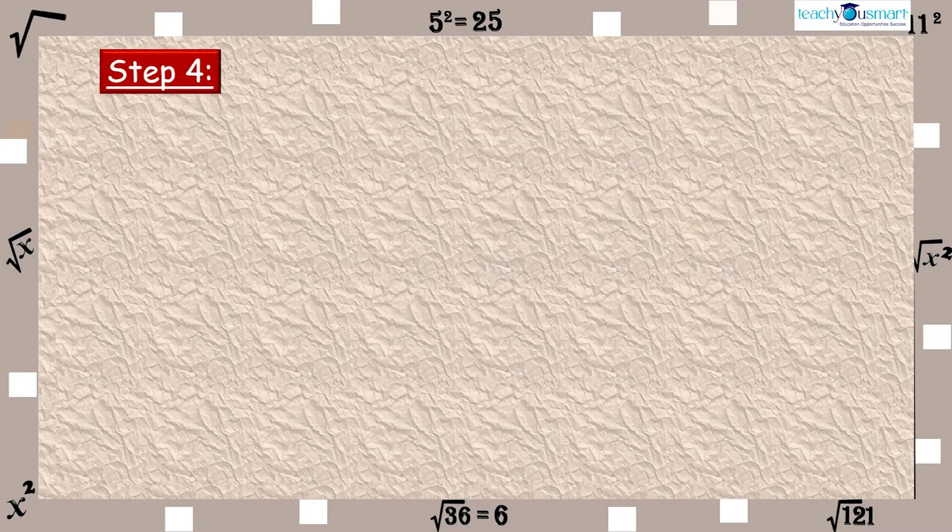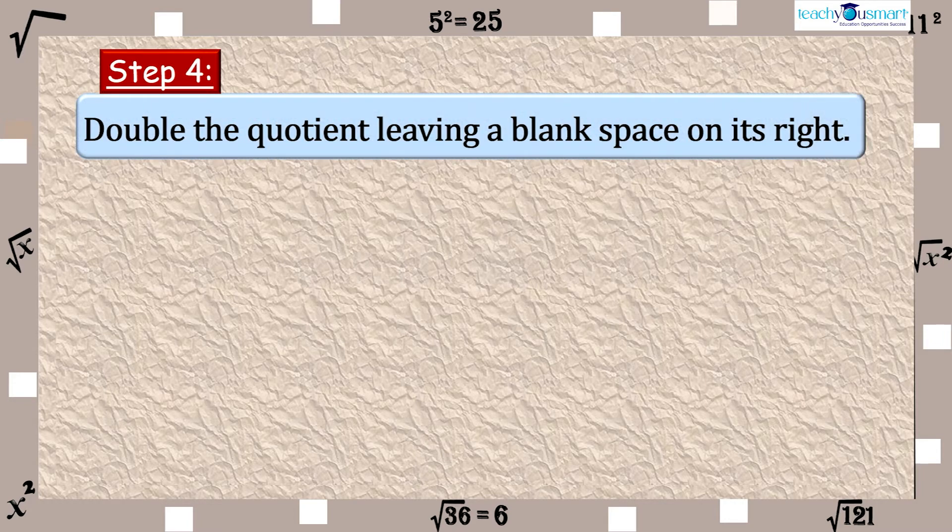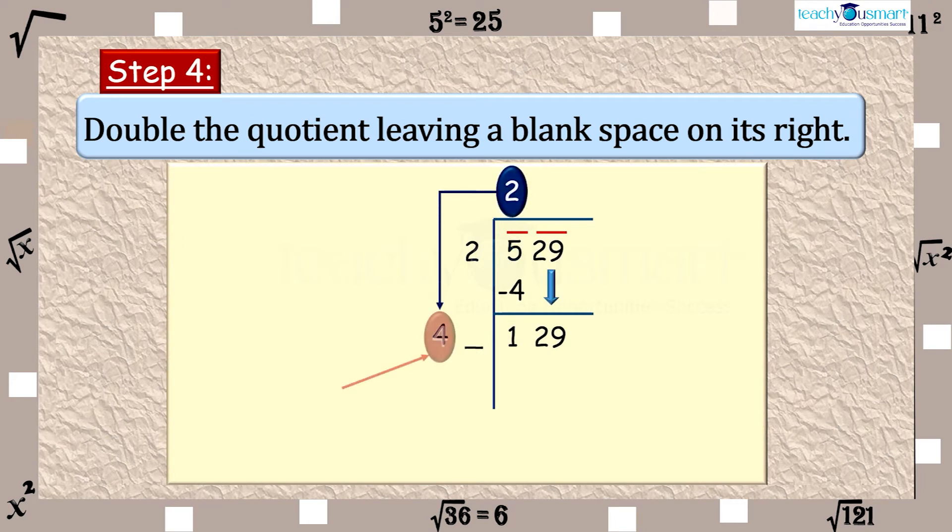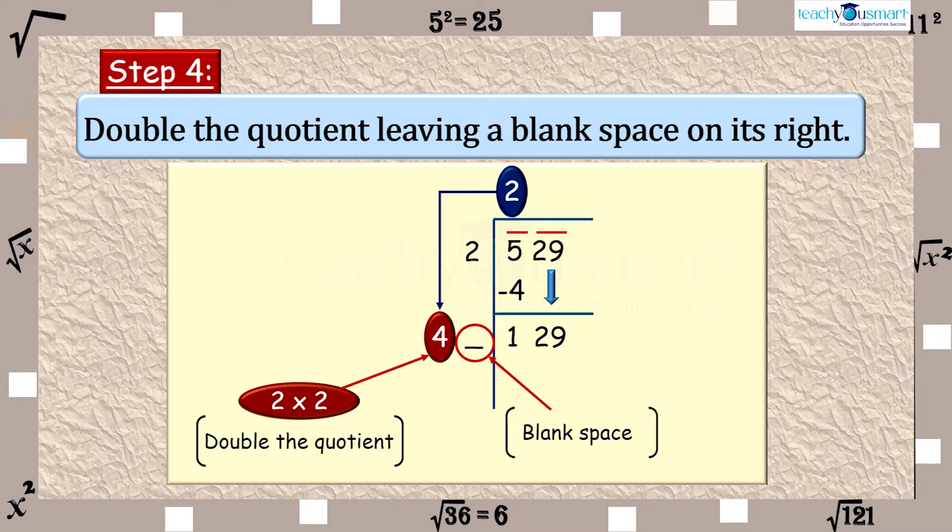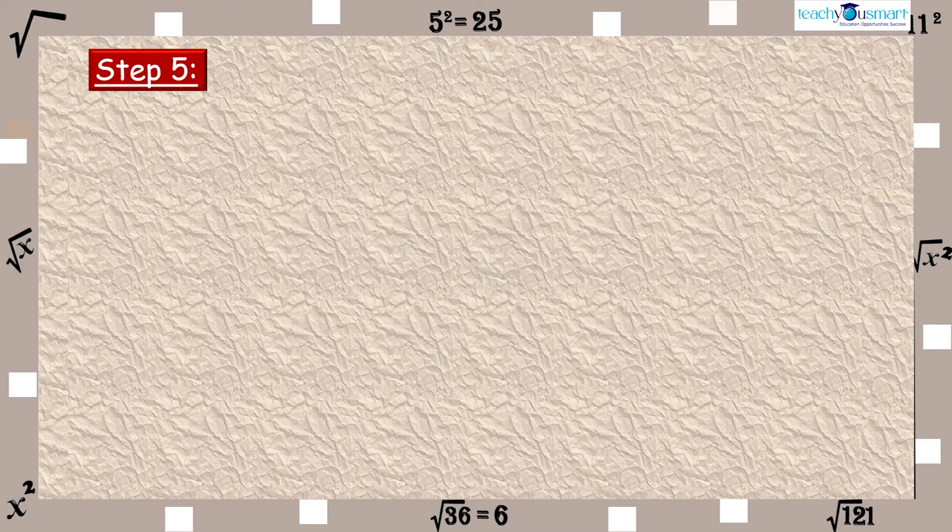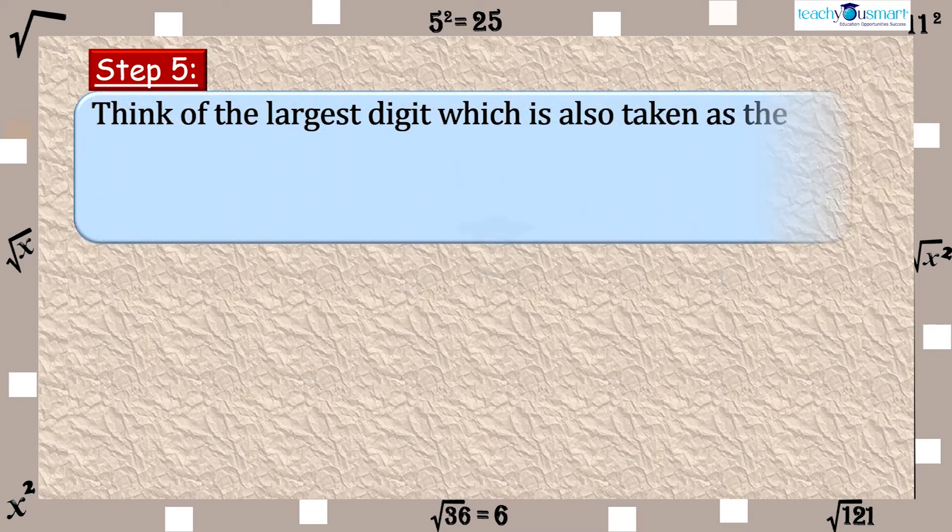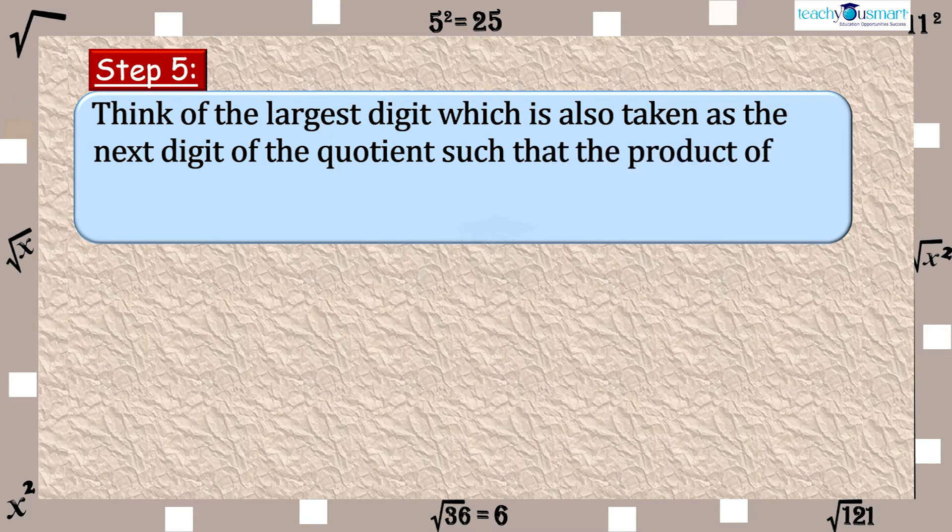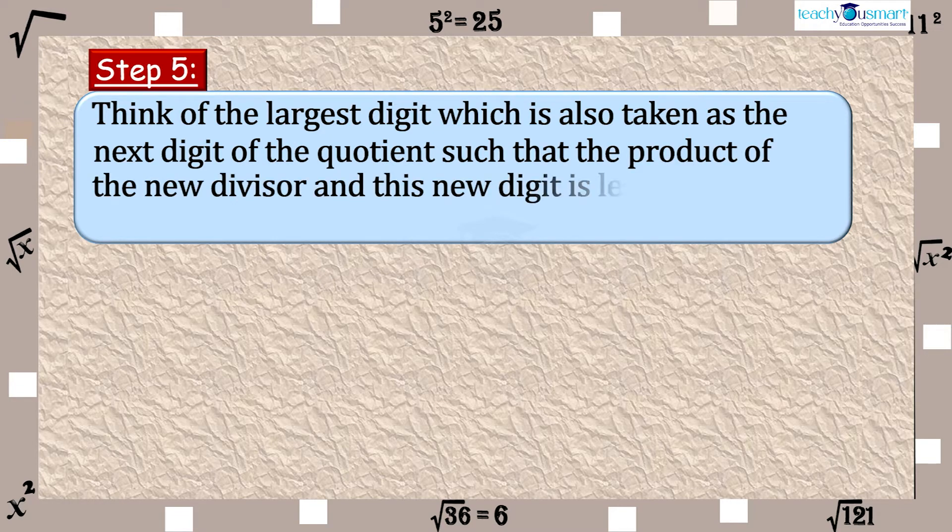Step 4: In order to determine the next divisor, double the quotient leaving a blank space on its right. Step 5: To find the next digit of the divisor, think of the largest digit which is also taken as the next digit of the quotient such that the product of the new divisor and this new digit is less than or equal to the new dividend.